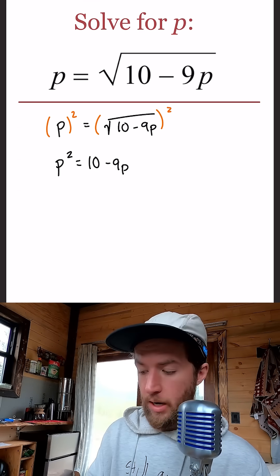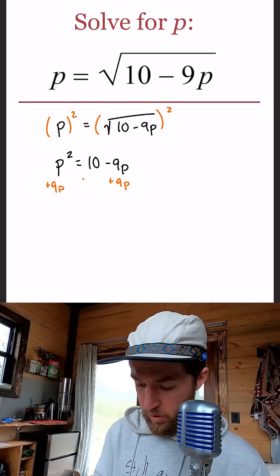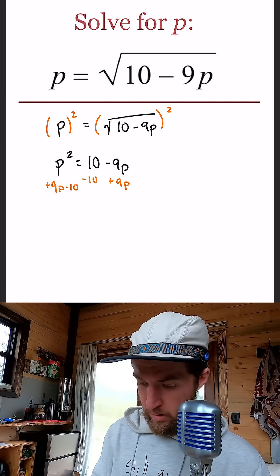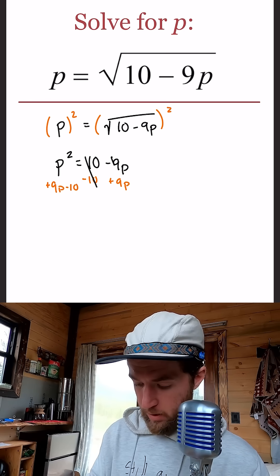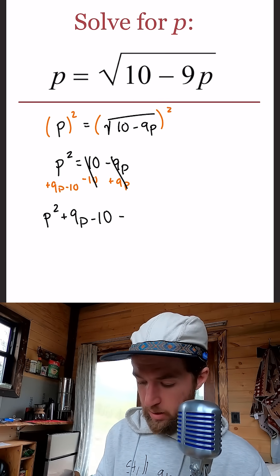Okay, now let's get everything to one side. So we'll add 9P to both sides and we'll subtract 10 from both sides. And when we do that, we cancel everything on the right and we're left with P squared plus 9P minus 10 equals zero.